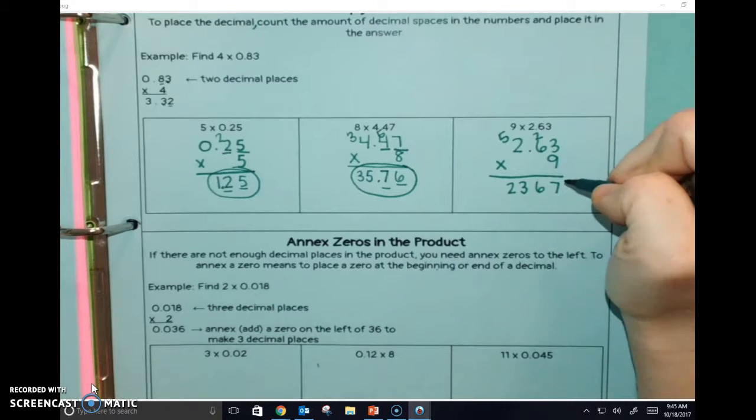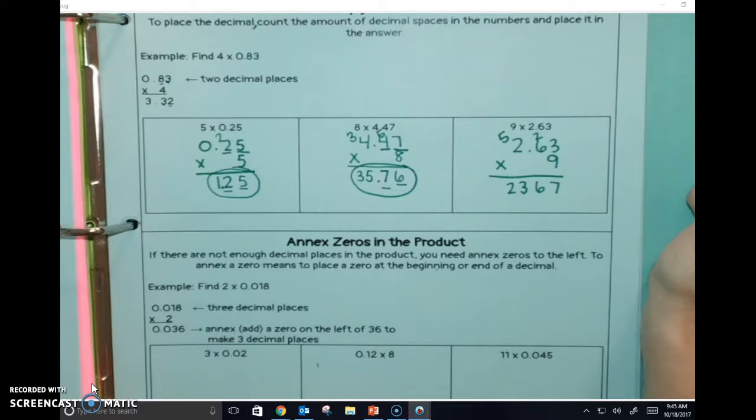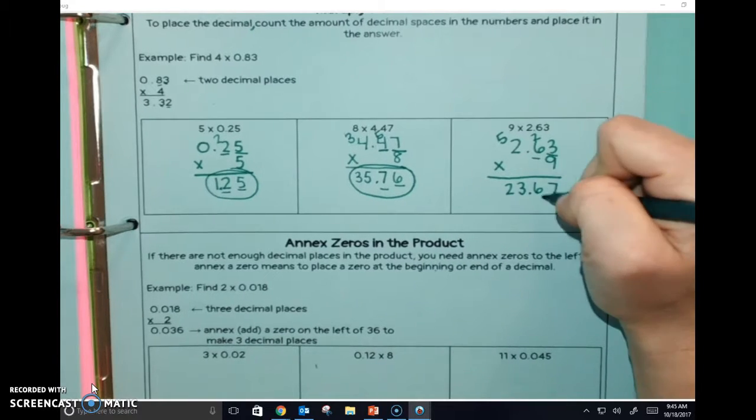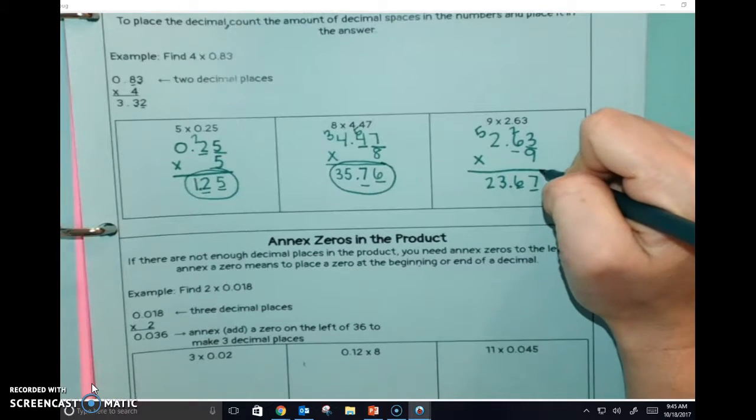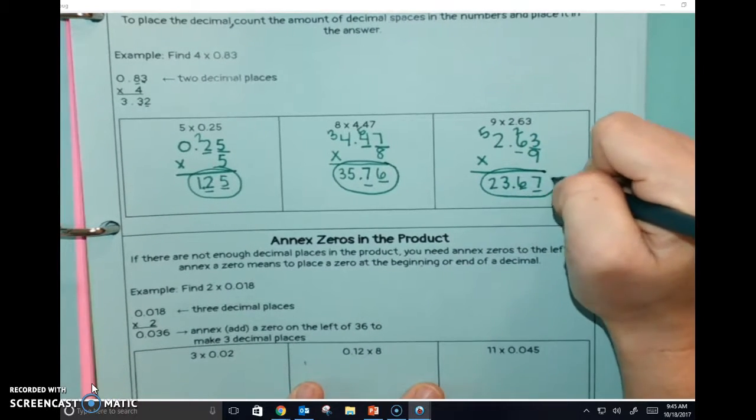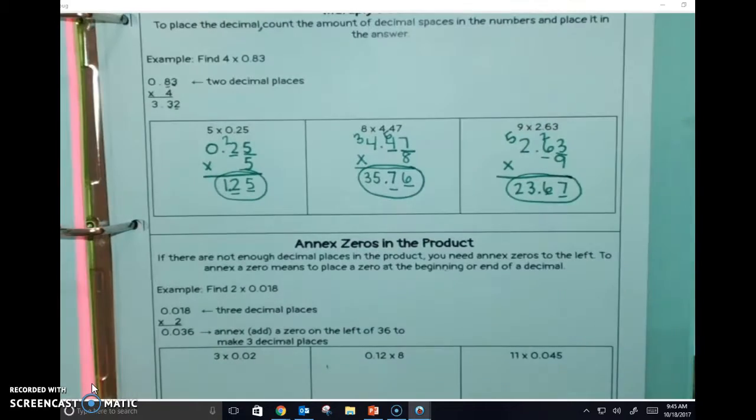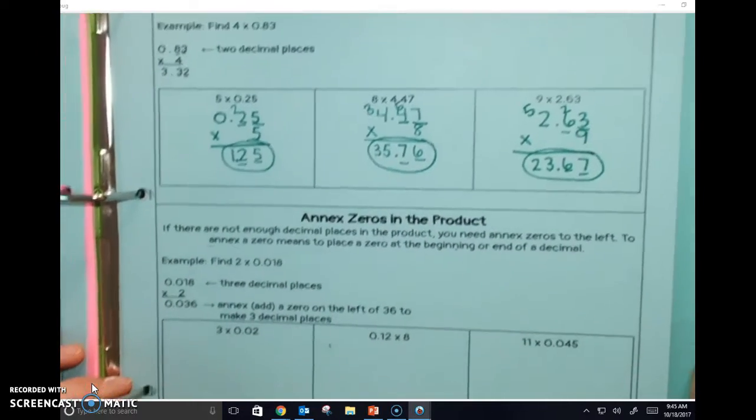Raise your hand if you know where the decimal is going to go. Carter? Between the 3 and the 7. Because we have one, two, one, two. I should have made it a little bit different, not all two. Sorry. Sometimes it'll be one or three or four.